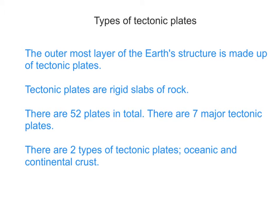Welcome to this presentation on types of tectonic plates. The earth's structure is broken up into layers, and the outermost layer is composed of tectonic plates. Tectonic plates are defined as rigid slabs of rock, and there are about 52 plates in total, with 7 major tectonic plates. There are lots of minor and micro ones as well. There are two types of tectonic plates: oceanic and continental plates, or what we sometimes call crust.